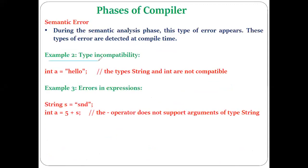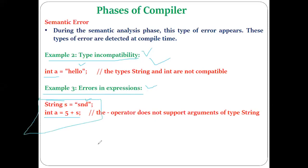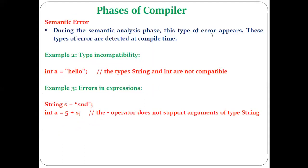Regarding type compatibility: if you declare a variable as 'n' and try to assign a string to it, that is not type compatible. Another kind of error occurs when you declare a string variable 's', assign a string to it, and then try to add an integer to it. You are trying to do addition of an integer and a string, which is not possible — that is another kind of semantic error detected by the semantic analyzer, our third phase of compiler.